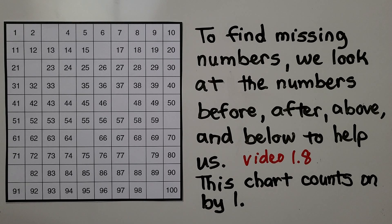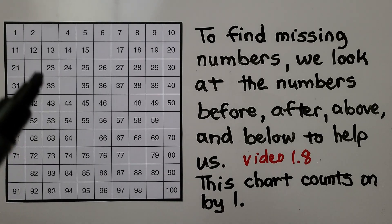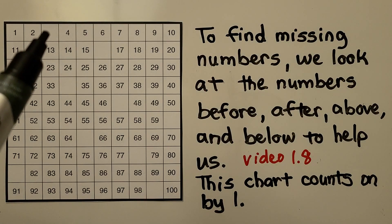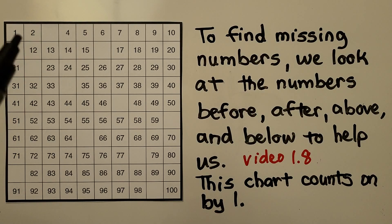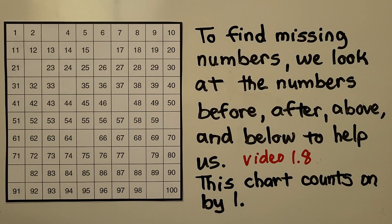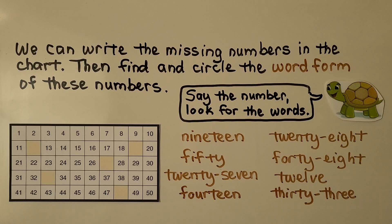In video 1.8, we learned to find missing numbers by looking at the numbers before them, after them, above them, or below them. That will help us find the missing number. This chart counts on by one — we know the next missing number must be three, going one, two, three, four. We can find all the other numbers using the numbers around them.